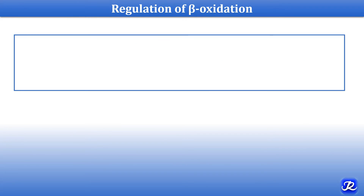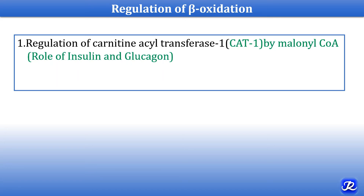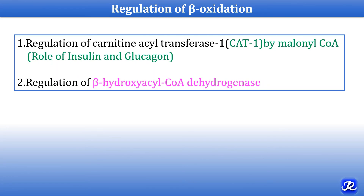How is beta oxidation regulated? It is regulated by carnitine acyl transferase 1, which is the rate-limiting enzyme and is located on the outer mitochondrial membrane. It is regulated by malonyl-CoA, an intermediate of fatty acid synthesis. Insulin and glucagon play important roles: insulin is the hormone of the well-fed state and glucagon is the hormone of fasting and starvation.